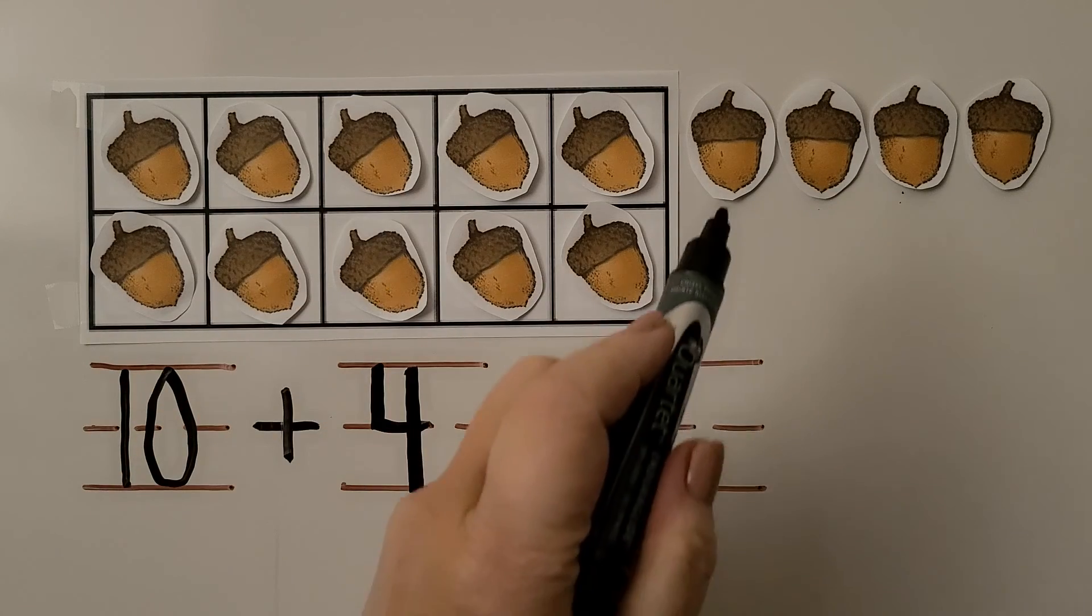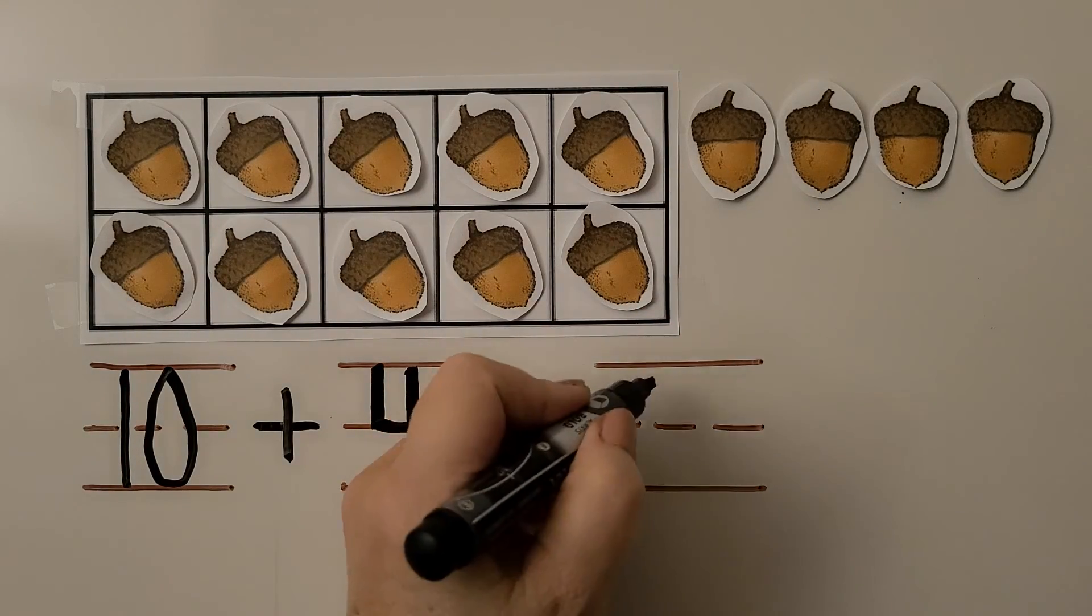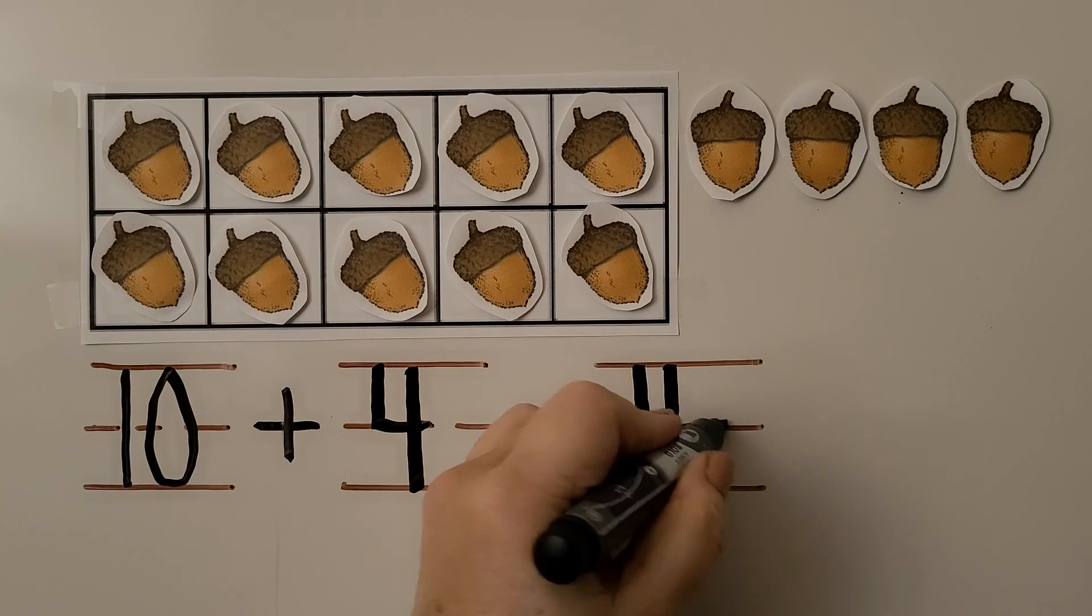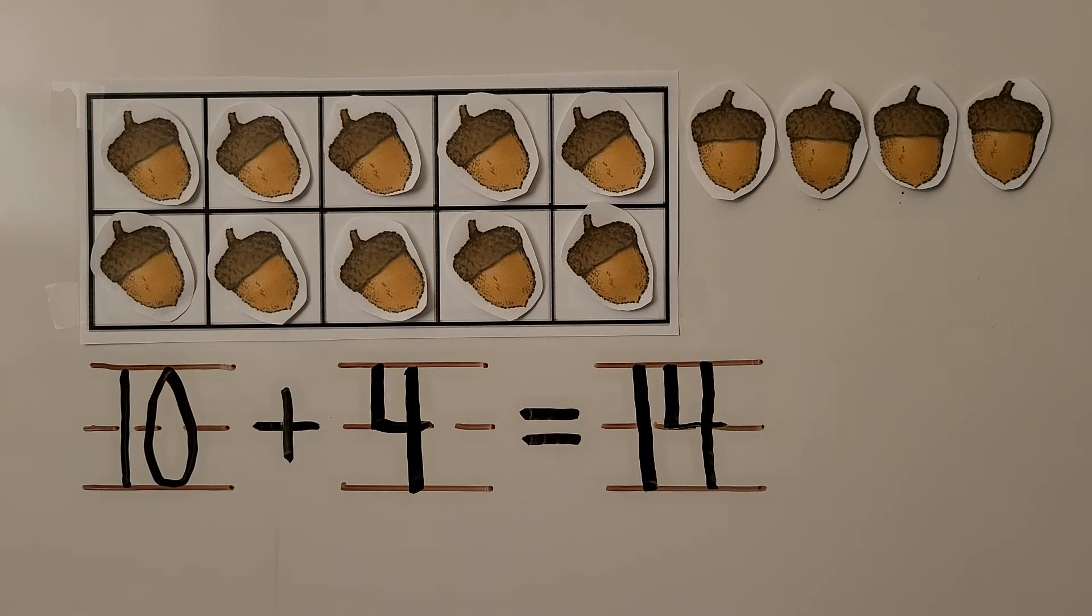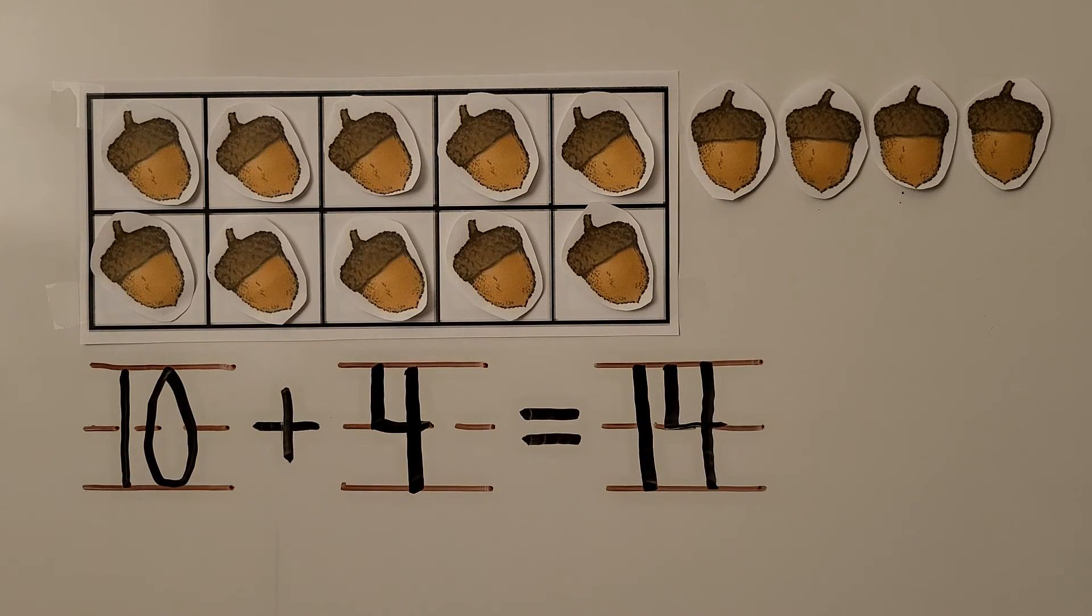10, 11, 12, 13, 14. We can write 14. There's 14 in all. 10 plus 4 more. 10 plus 4 more is equal to 14. We have 10 ones and 4 ones. That makes 14 ones.